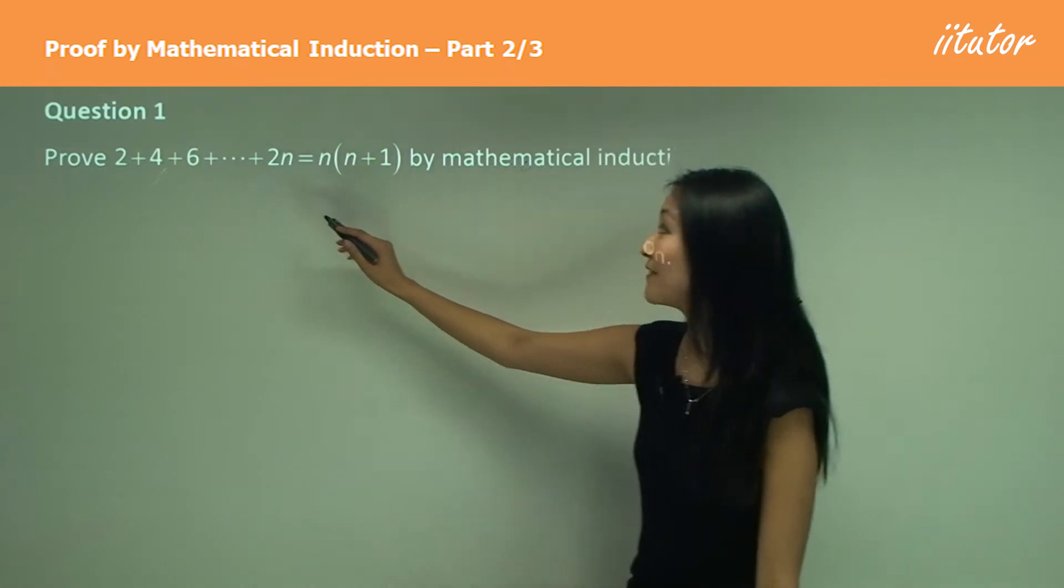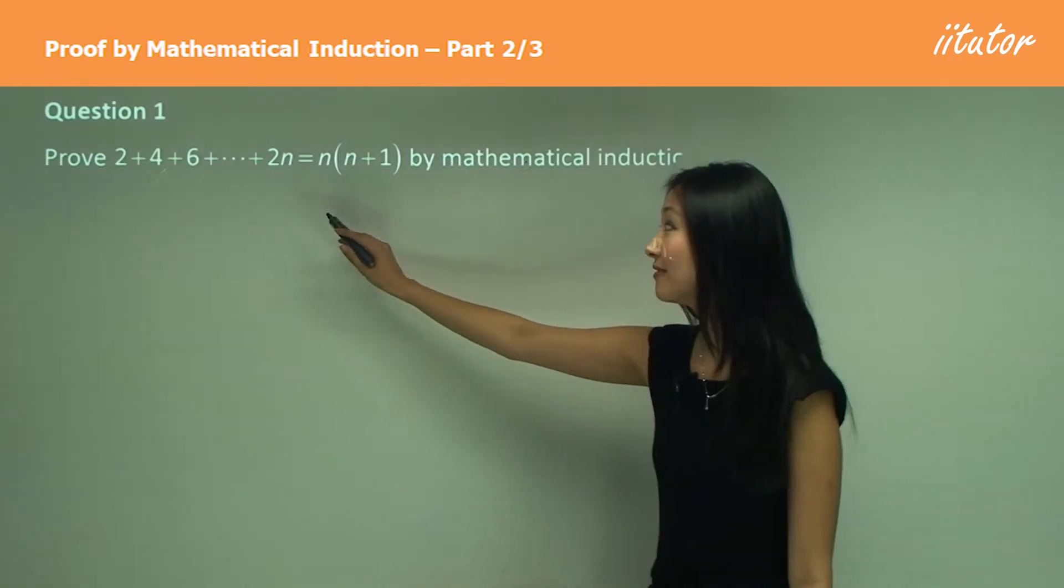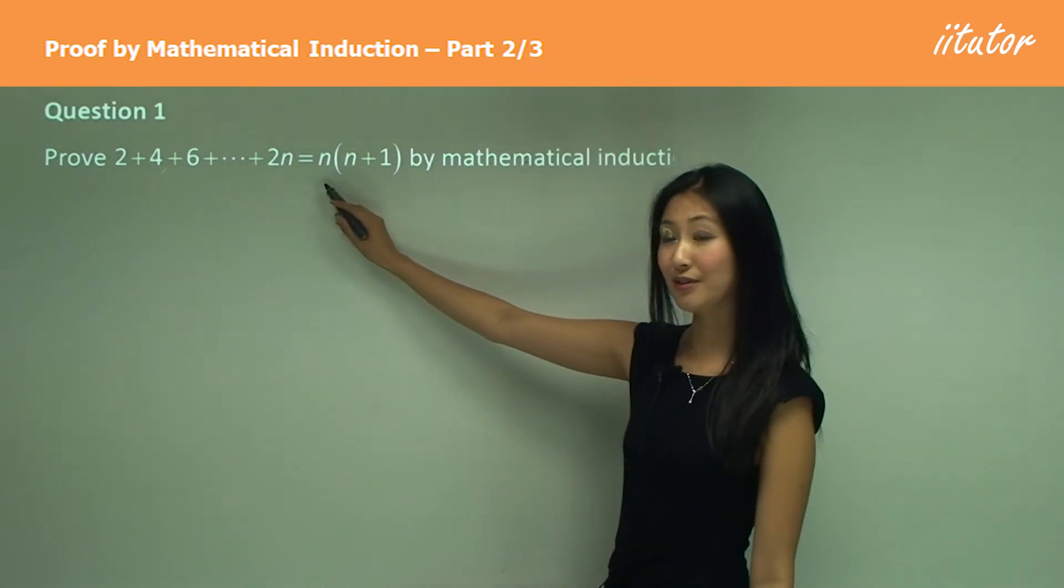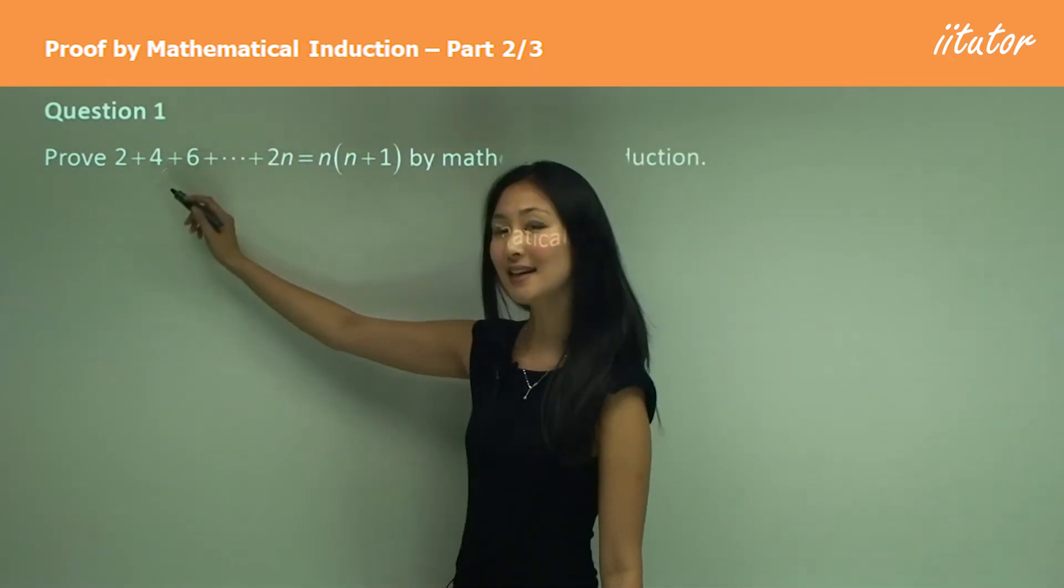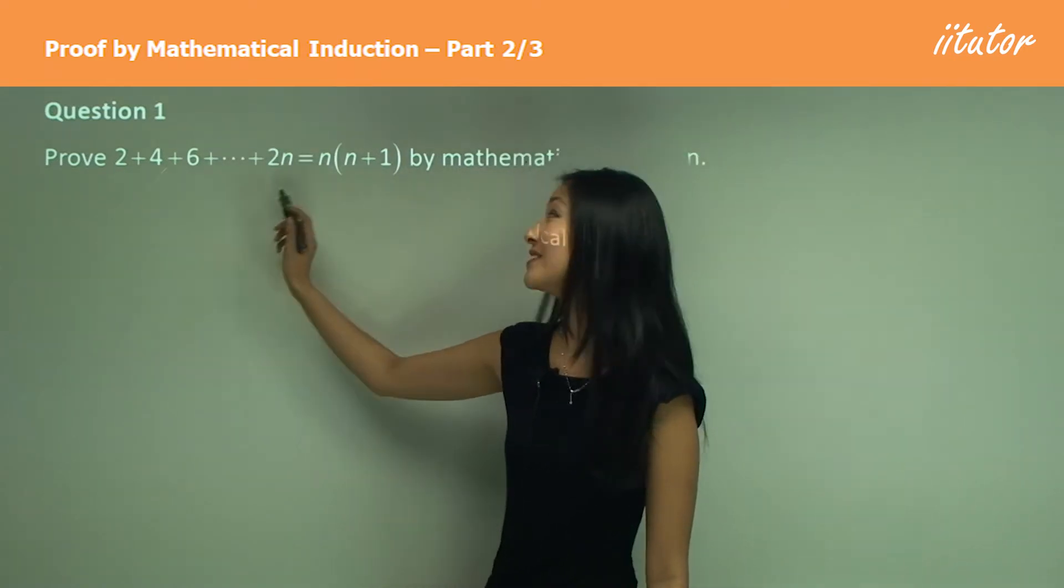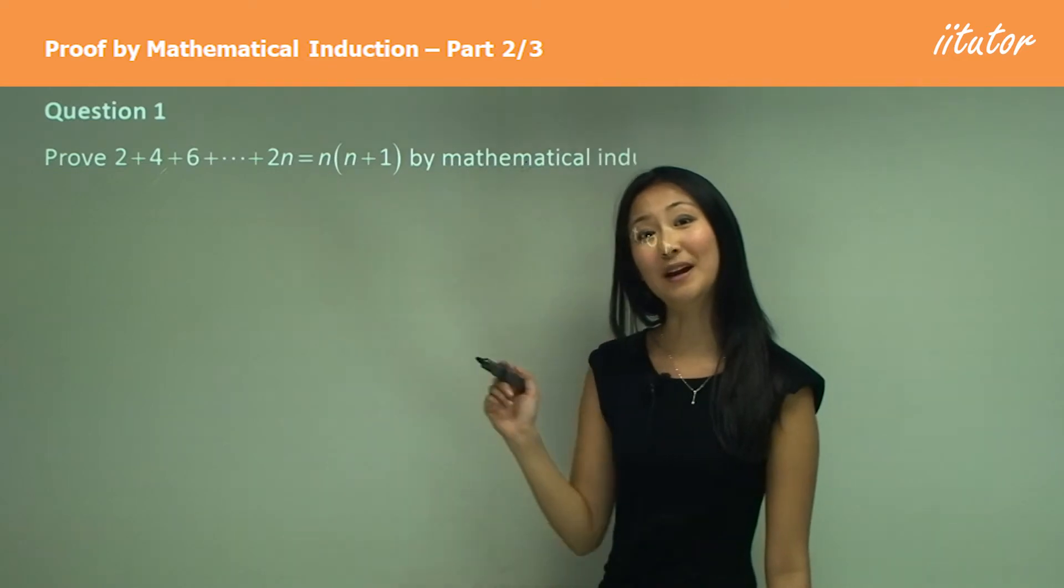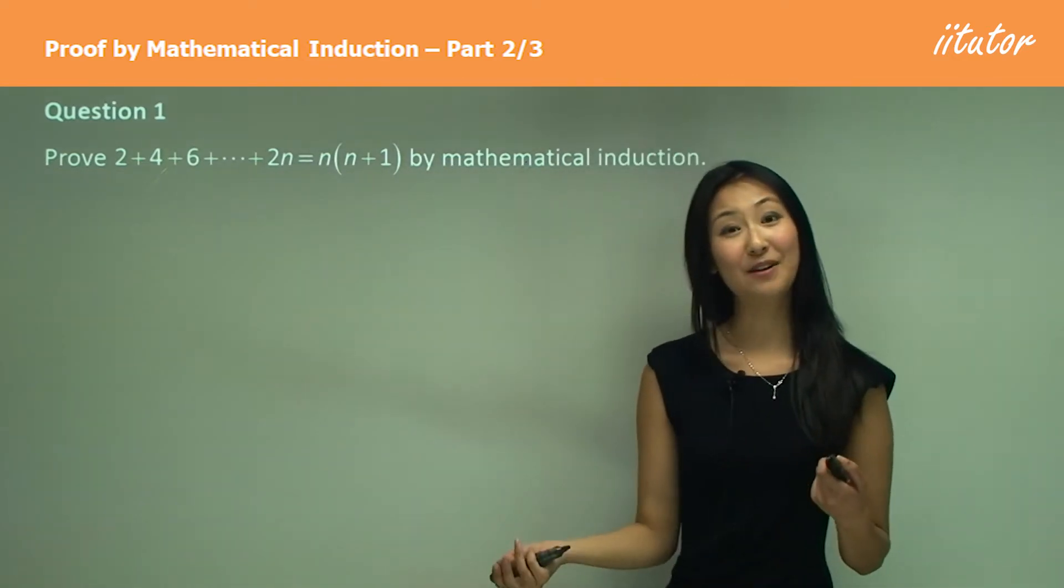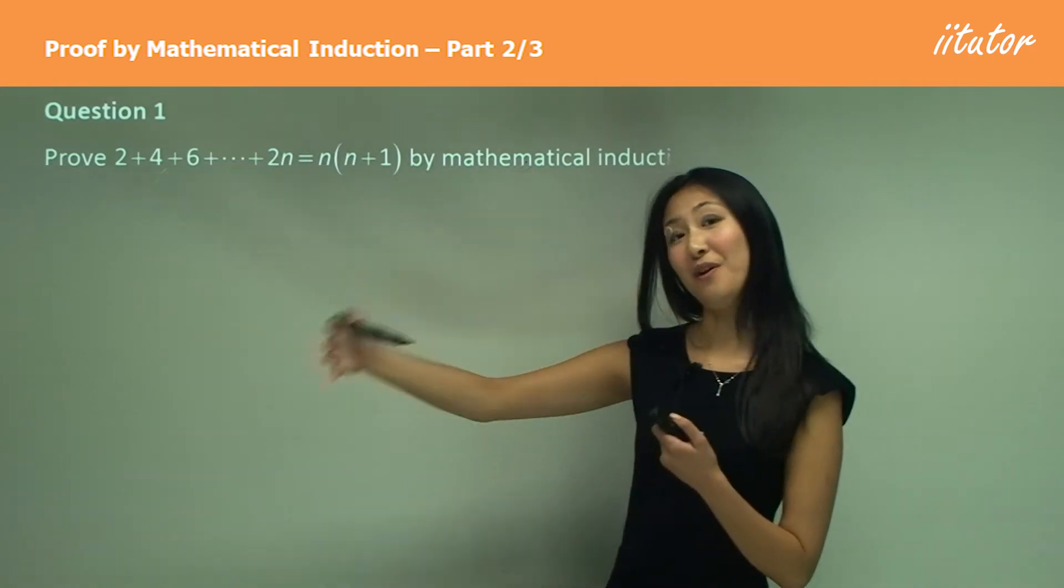You can see that if we sub in n equals 1, that gives us our first number. When we sub in n equals 2, that gives us our second number, and 3 gives us our third number. So this just gives us all the numbers, and the last n will give us the last term. That's why it's so on till 2n.